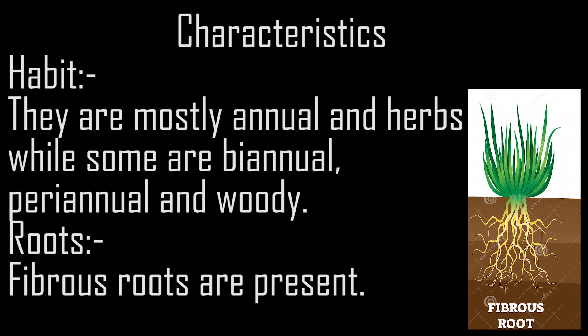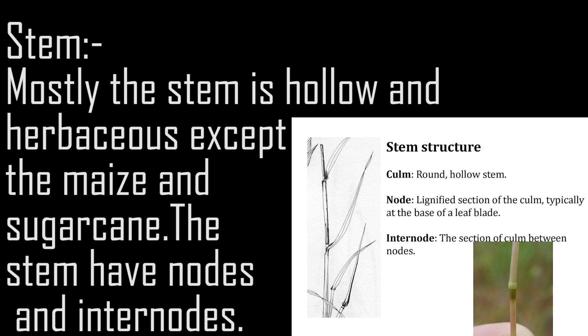Roots. Fibrous roots are present. Stem. Mostly the stem is hollow and herbaceous, except in maize and sugarcane. The stem has nodes and internodes.